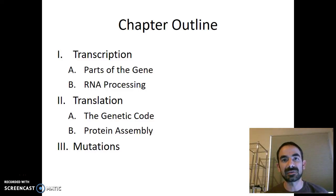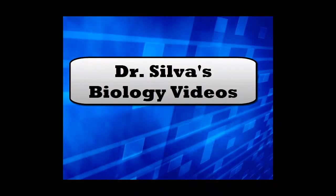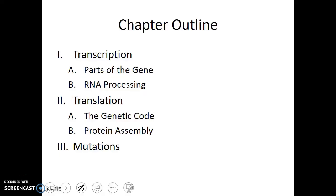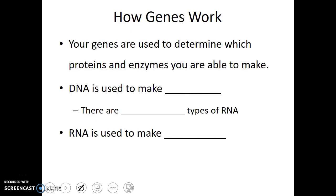The first step in the central dogma is transcription. In transcription, we're taking DNA as a template and making a copy of a small section of it. Your genes, which are stored in DNA, are used to determine which proteins and enzymes you are able to make. The DNA is used to make a molecule of RNA.